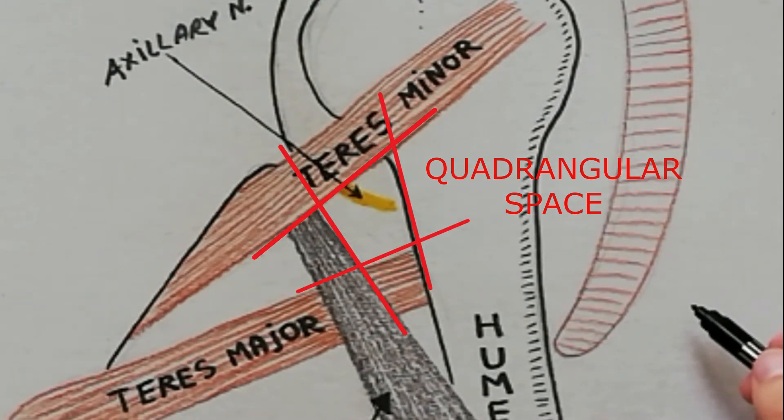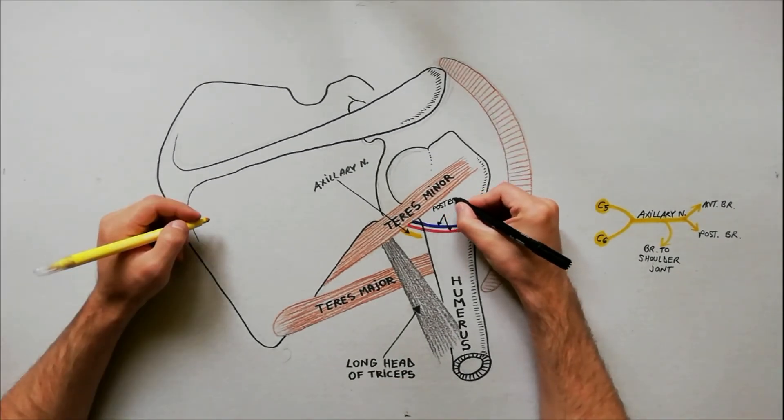Apart from the axillary nerve, the posterior circumflex humeral vessels are also passing through this space.